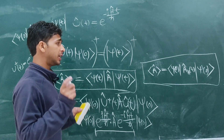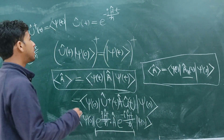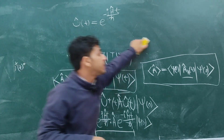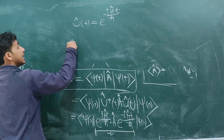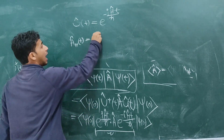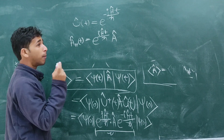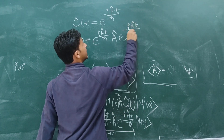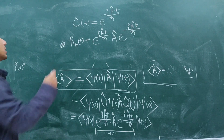To deduce the Heisenberg equation of motion, consider A-cap_H as a new operator. Just as U-cap is the time evolution operator of the Schrödinger picture, in the Heisenberg picture we define A-cap_H as: e to the power i H-cap t divided by h-cross, times A-cap (the time independent operator), times e to the power negative i H-cap t divided by h-cross.